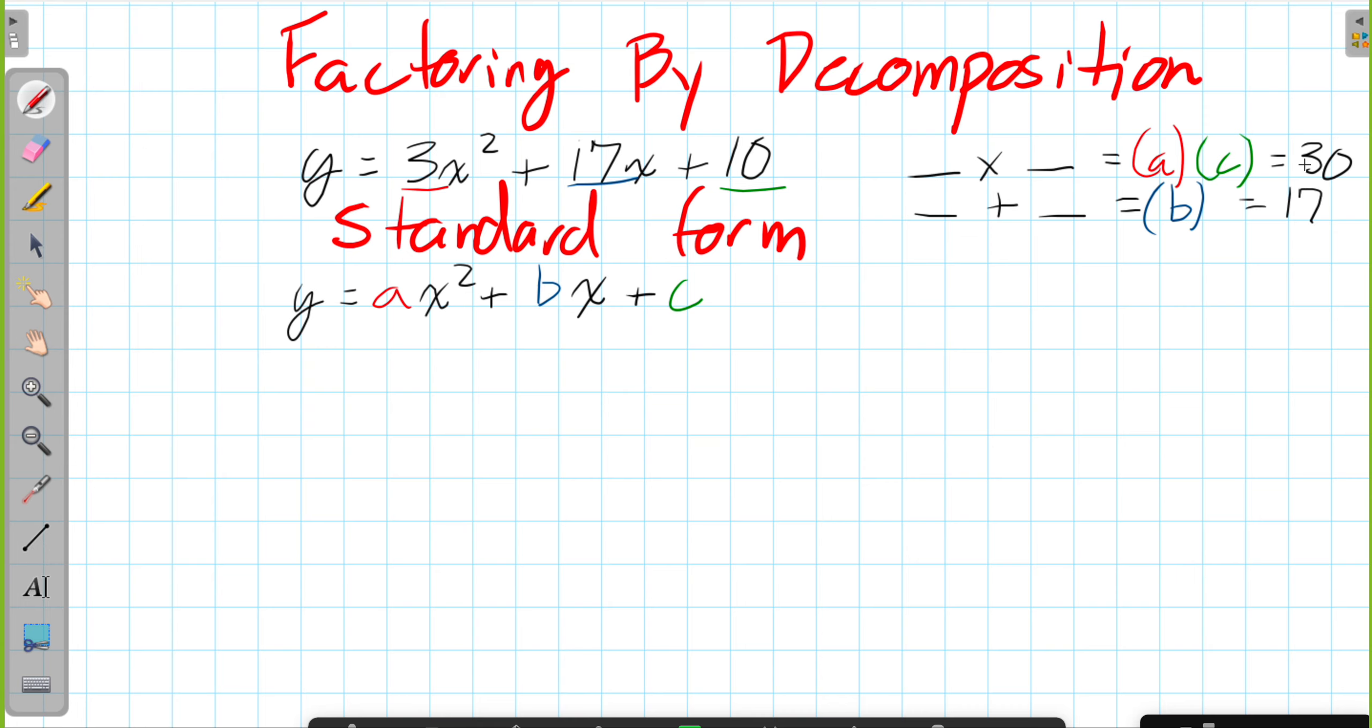Like we've done before, we can write factors of 30. Top of my head, I think 15 and 2 are going to work out really nicely. 15 times 2 gives you 30, and 15 plus 2 gives you 17. So those two check off the box.